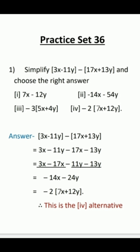To simplify: write (3x minus 11y) minus (17x plus 13y). The first bracket stays as it is — 3x minus 11y — but the second bracket is multiplied by the minus sign. So minus 17x, and minus into plus gives minus 13y. Now bring the like terms together: 3x minus 17x, and minus 11y minus 13y. For 3x minus 17x, plus into minus is minus, so subtract 3 from 17 to get 14, giving minus 14x. For minus 11y minus 13y, both signs are minus so add 11 and 13.